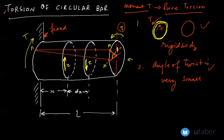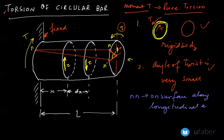Now, if you look at this line NN, this straight line NN is a line on the surface and it is parallel to the longitudinal axis. So NN is a line on surface along the longitudinal axis, and Phi is your angle of twist.